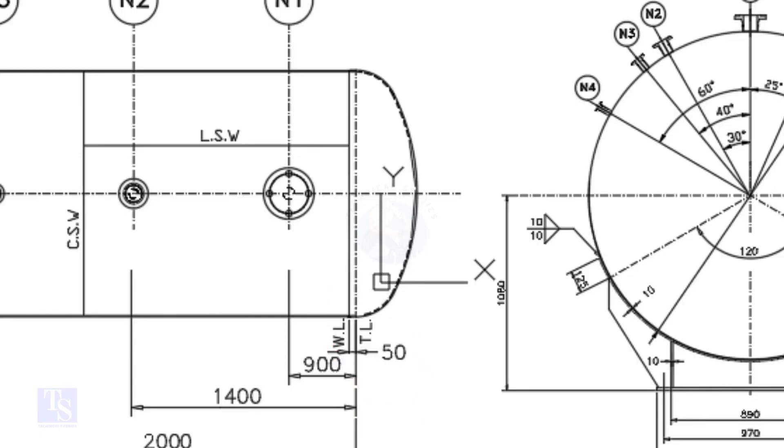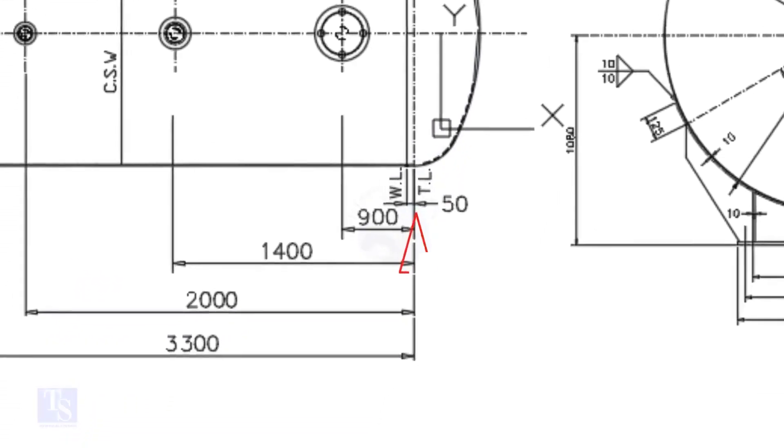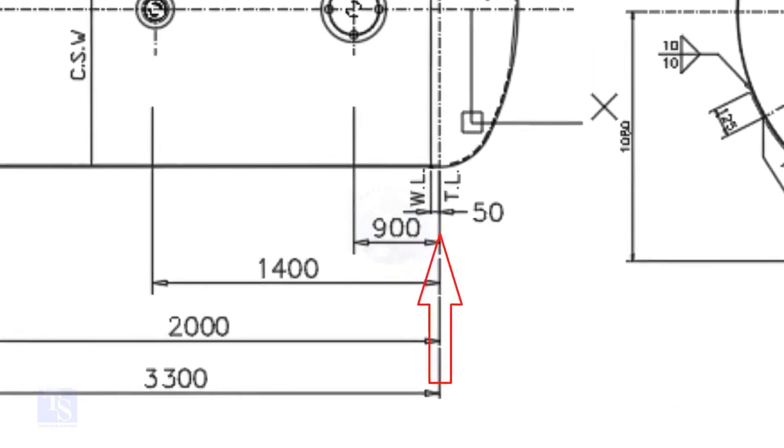In this drawing, the nozzle center distance is starting from the TL. In some drawings, you may see the nozzle center is given from the WL, so before starting the marking, carefully see these things.